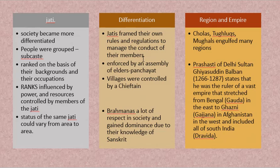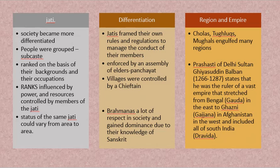In a particular place, the blacksmith jati may rank high; in another place, the teacher jati could be higher; in yet another, the agricultural jati could be highest. The jati was based on background and occupation, and their ranking depended on power, influence, money, taxes paid, and necessity in society. The rank could go up and down, and the status could differ by region. This is how people in society were getting differentiated during the medieval period.